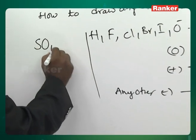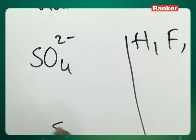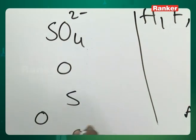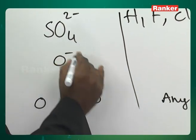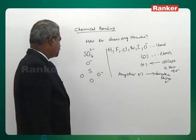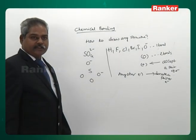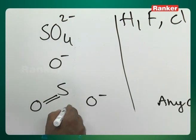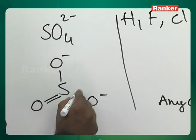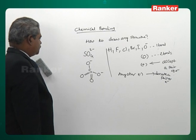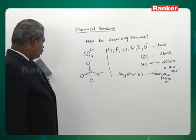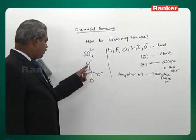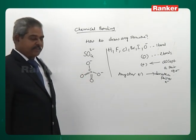SO4²⁻: one sulfur, four oxygens. Two of them are O⁻. Oxygen forms two bonds each, O⁻ forms one bond each. Don't worry whether sulfur can form six bonds or not — it's too early for that concern.